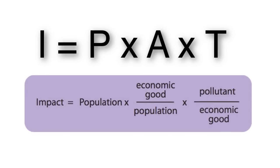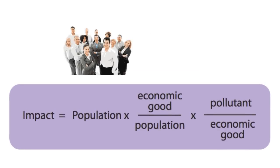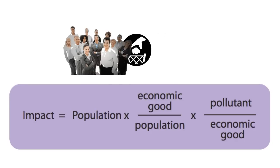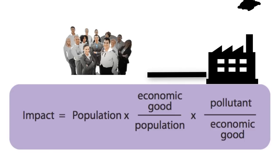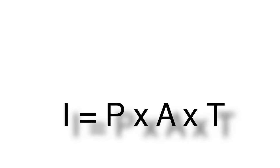Let's look more closely at this model. The mental model presumes that each person represents a consumer of economic goods and services. The affluence term represents the economic goods and services that are able to be consumed per person. The technology term represents the pollutants emitted per economic good or service consumed.